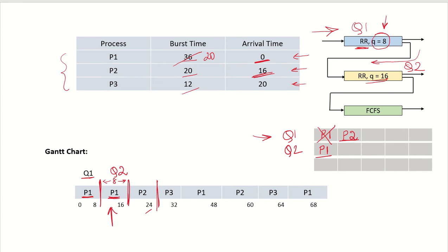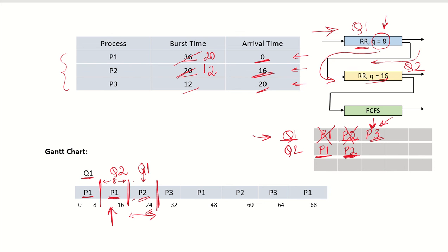By this point P1 has already run for 16 total time units, leaving 20 time units remaining. P2 runs for 8 time units until time 24, leaving 12 time units remaining for P2. At time 20, process P3 also arrived in Q1, but P2 was not preempted since P2 was already running in the same queue Q1. Once P2 finishes its time quantum in Q1, it is moved to Q2. At this point, Q1 still has P3 waiting.